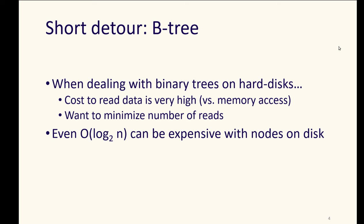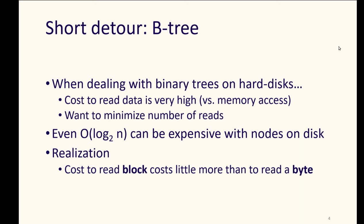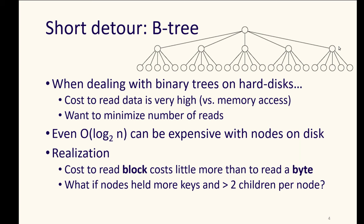Because even O of log N, O of log 2 N can be expensive if our nodes are on a disk, a hard drive. The cost to read a block is a little more than the cost to read a byte. We may as well read a larger chunk that we've navigated to on that disk rather than just look up these small pieces that our individual nodes would have been. So if our nodes held more keys and possibly had greater than two children per node, we could look up larger amounts of data at once and have possibly shallower trees to deal with too.